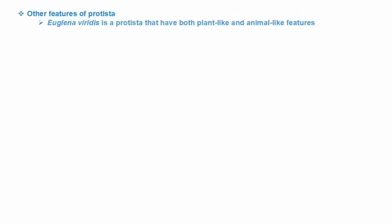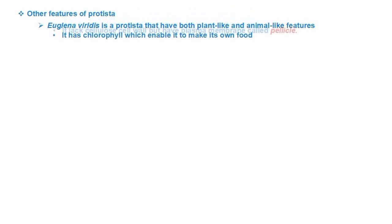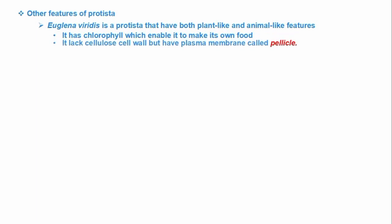Other features of Protista: some Protista, for example Euglena, have both plant-like and animal-like features. First, it has a chloroplast which enables it to make its own food. But it lacks a cell wall and instead has a plasma membrane called a pellicle. So Euglena is a borderline between plants and animals because it exhibits characteristics of both.